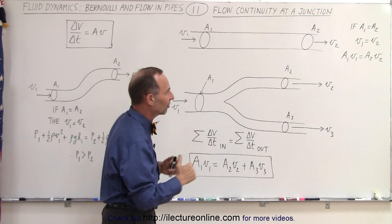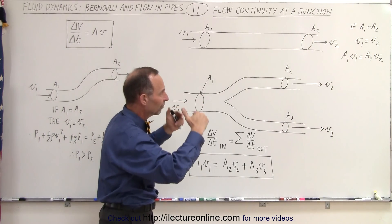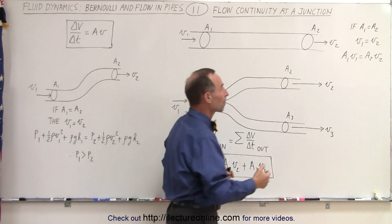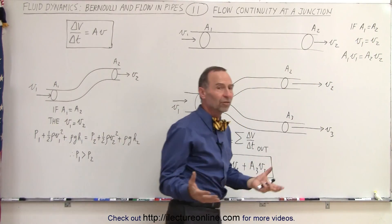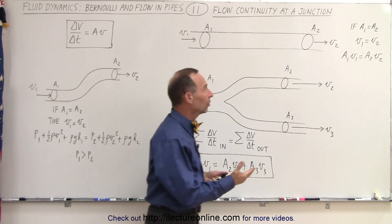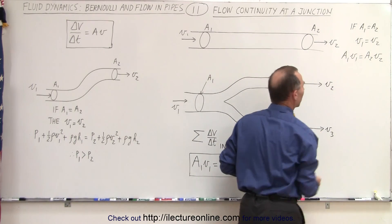it stays horizontal, it stays at the same altitude or same elevation, and therefore if the cross-sectional areas are the same by necessity, the velocities must be the same because A1V1 must equal A2V2.